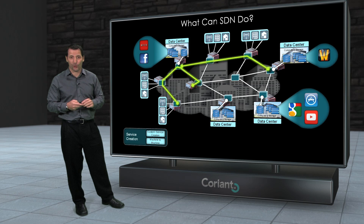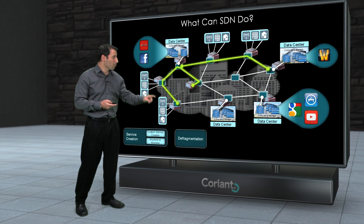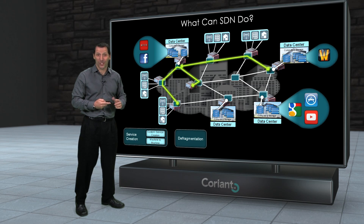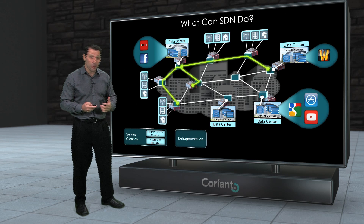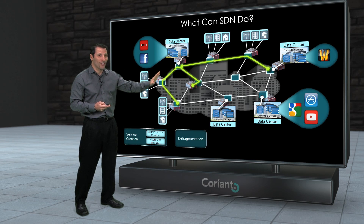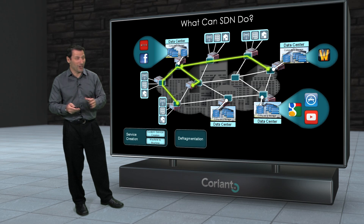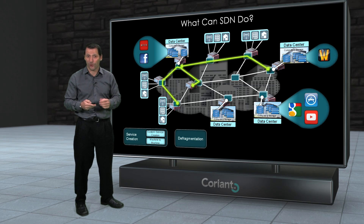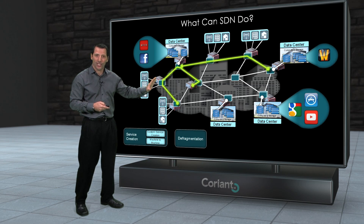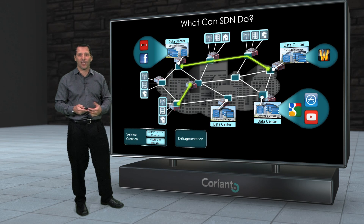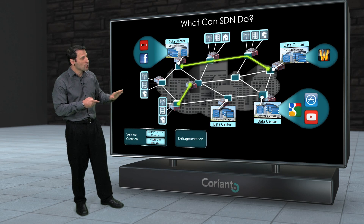There are a couple of other interesting applications, one of which is defragmentation. When services are originally established, they take the most efficient path possible in general. But the fact is that transport network topology changes over time — you establish new connectivity options in the network, and over time you find that a lot of these connections are not taking the most efficient route possible. We all know how often service providers go back and audit these networks and realign all their traffic — virtually never. But this is something that SDN can do: it can audit the network, analyze all the current connections, determine if they're taking the most optimal path, and then re-provision or reconnect them to better utilize the resources in the network, freeing up resources. That's defragmentation.